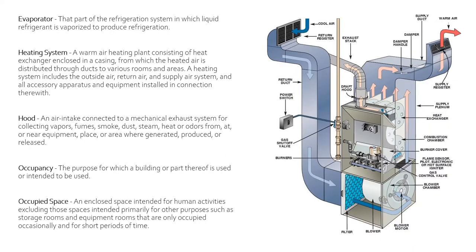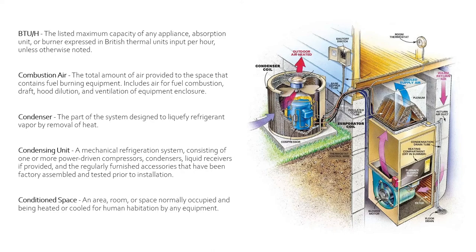Next is the evaporator. That is a part of the refrigeration system in which liquid refrigerant is vaporized to produce refrigeration. The evaporator coil is the one on the inside of the house. Refrigerant runs through a pipe into this coil, and then air is blown across it. The cold gas runs through essentially a radiator, and the air picks up coolness off the coil and then blows it out into your house.